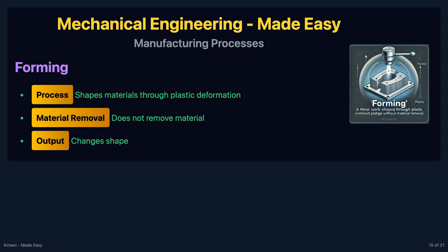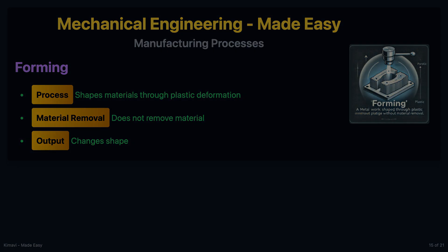Forming is a manufacturing process that involves shaping materials, usually metals, through plastic deformation. This process does not remove material, but instead changes its shape.